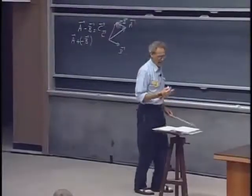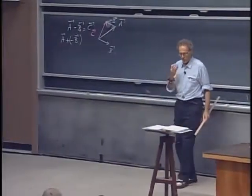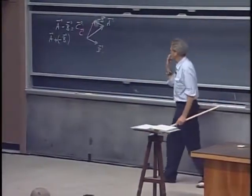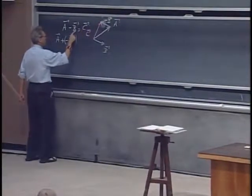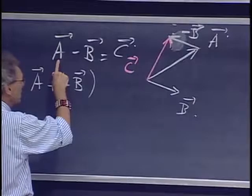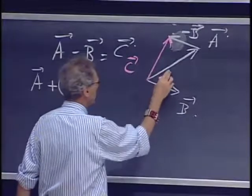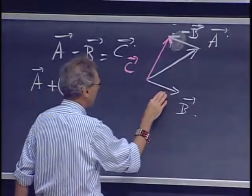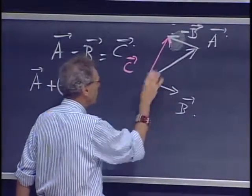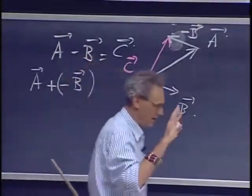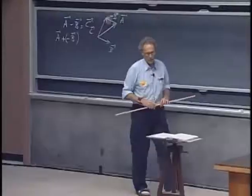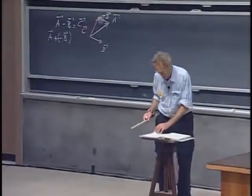And of course, you can do it in different ways. You can also think of it as C plus B is A, right? You can bring this to the other side. You can say C plus B is A. In other words, which vector do I have to add to B to get A? And then you have the parallelogram technique again. There are many ways you can do it, but the head-tail technique is perhaps the easiest and the safest.